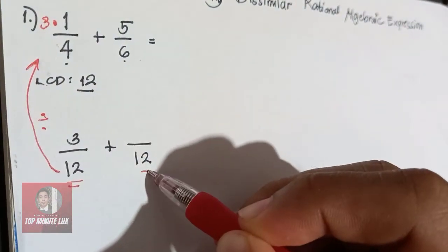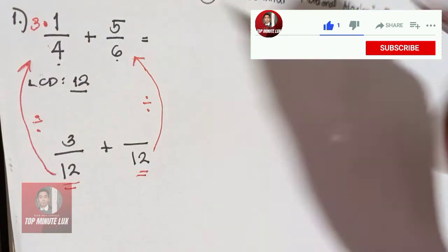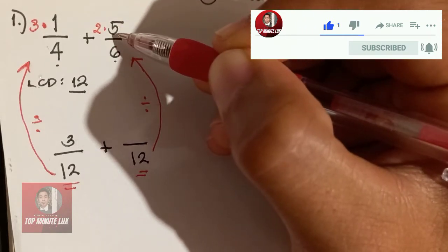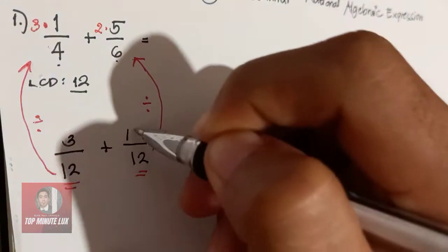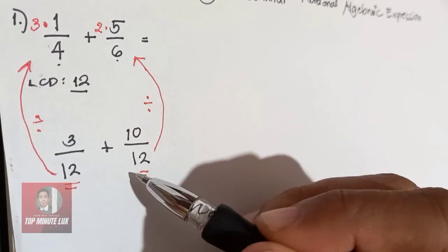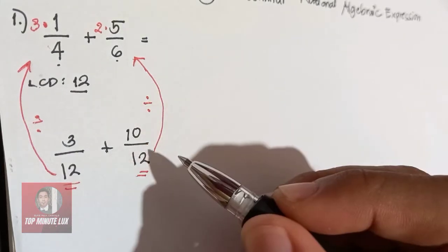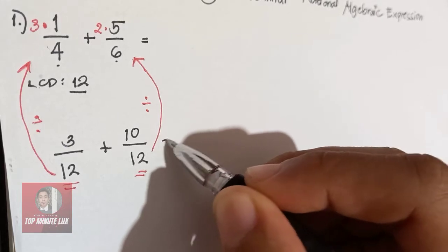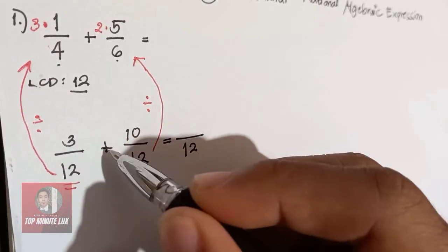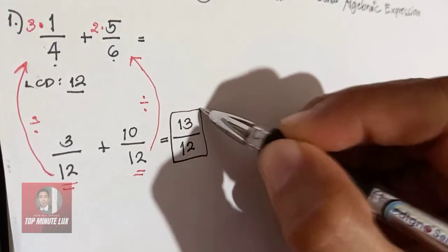Next, 12 divided by 6 gives 2. Then, 2 times 5 gives 10. Since it is already a similar fraction — similar rational algebraic expression — you can immediately add it using the rule for adding similar rational algebraic expressions. The denominator stays 12, and 3 plus 10 gives 13. Therefore, the answer is 13 over 12.